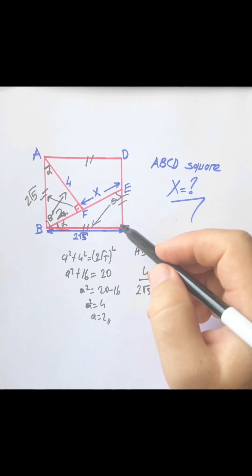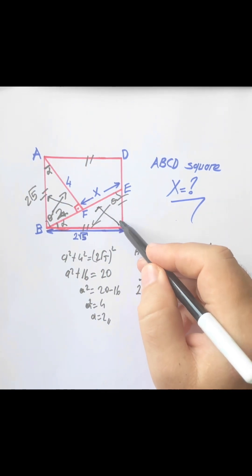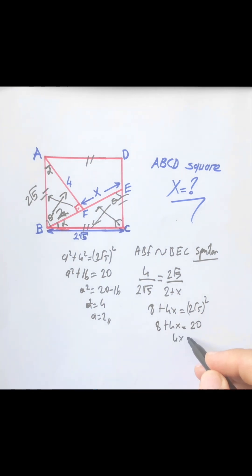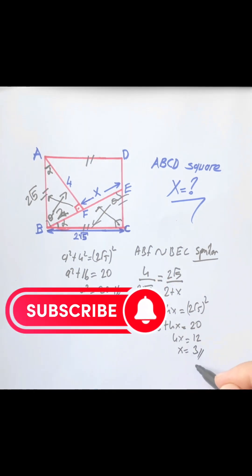Cross-multiplying gives us 8 + 4X equals (2√5)². Since (2√5)² equals 20, we have 8 + 4X = 20. Therefore, 4X = 12, and we find X = 3 units.